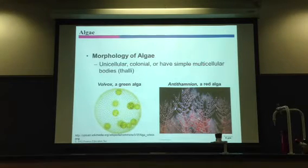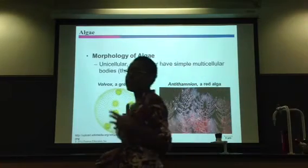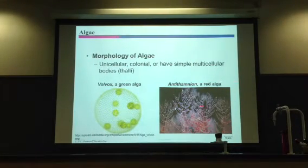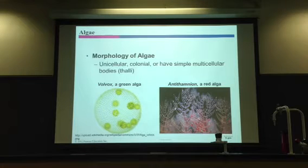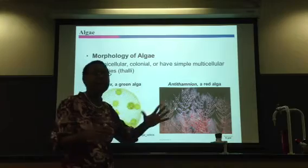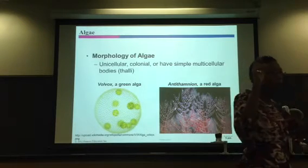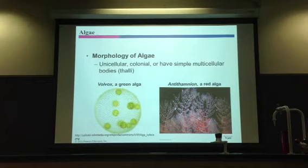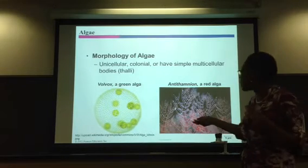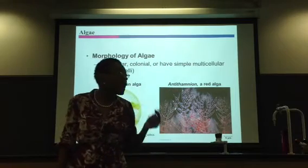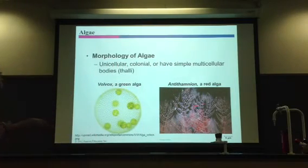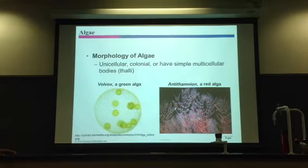Algae can also have simple multicellular structures, and if they do, we call that whole structure a thallus. If we look at this red algae, it looks multicellular — in fact it looks like a plant. The reason why these multicellular algae are not plants is that algae lack true tissues and true organs, just like fungi. All these cells are exactly the same, whereas in your tissues you have different kinds of cells.